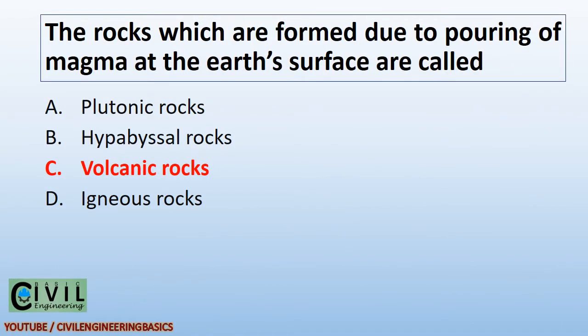The rocks which are formed due to pouring of magma at the Earth's surface are called volcanic rocks.